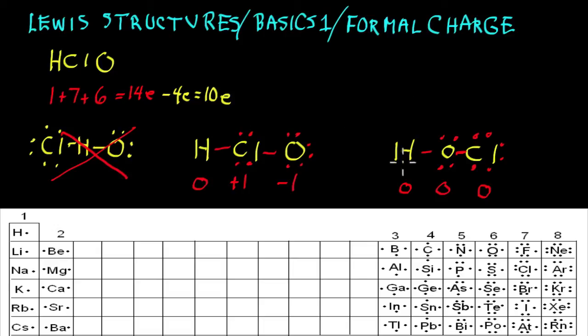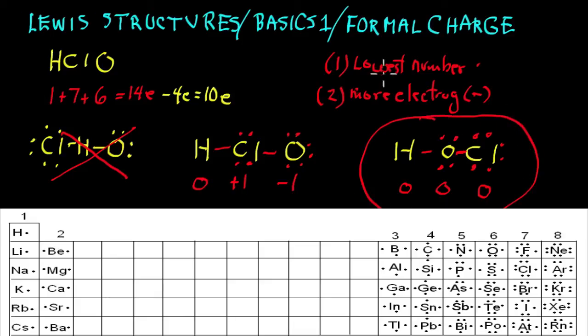The rule is, in formal charge, when you can draw more than one Lewis structure, the one that has the least number of formal charges, or the lowest number of formal charges, is preferred. Rule number 1: the lowest number of formal charges is preferred. The second rule is any formal charge should follow the electronegativity of the atom. The more electronegative element should be minus. Here, the lowest number is this, so you can see this is already the preferred structure.